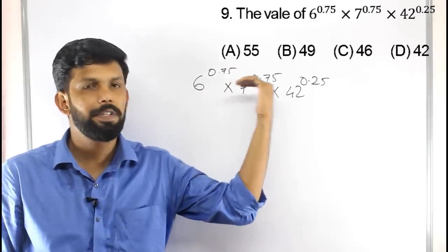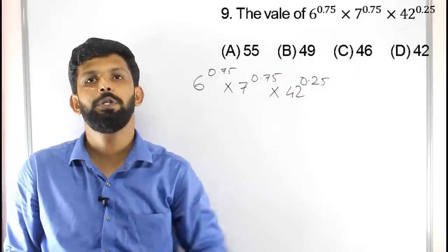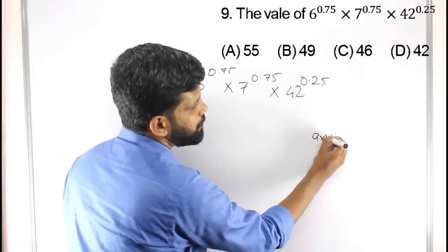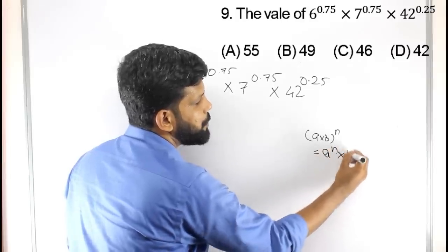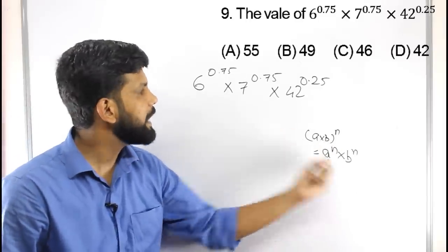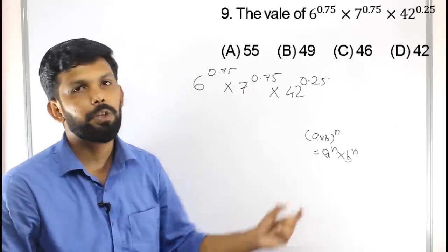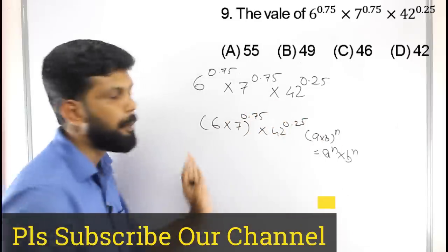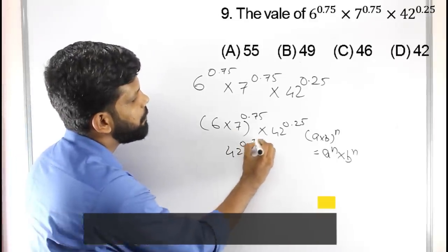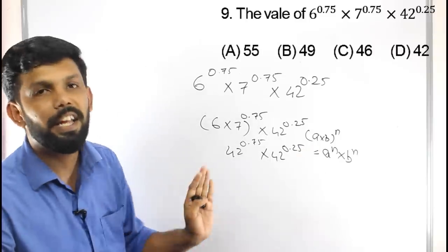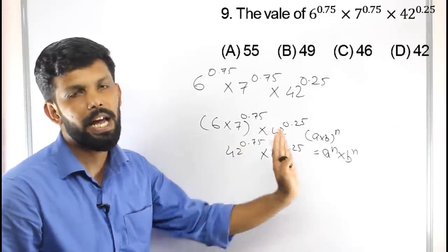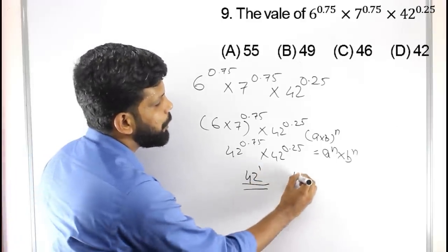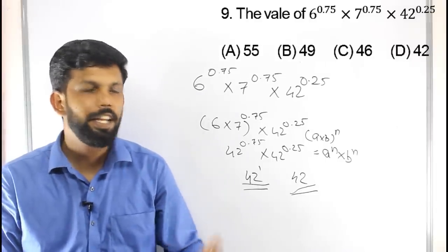Next question: simplify 6 raised to 0.75 multiplied by 7 raised to 0.75, divided by 42 raised to 0.25. The rule states A^N × B^N = (A×B)^N. Applying this: 6^0.75 × 7^0.75 = 42^0.75. Then 42^0.75 divided by 42^0.25 = 42^(0.75+0.25) = 42^1 = 42. Our right answer is Option D, 42.